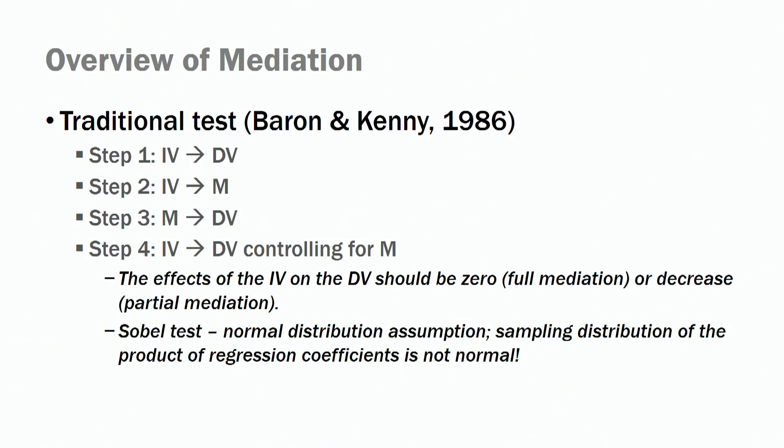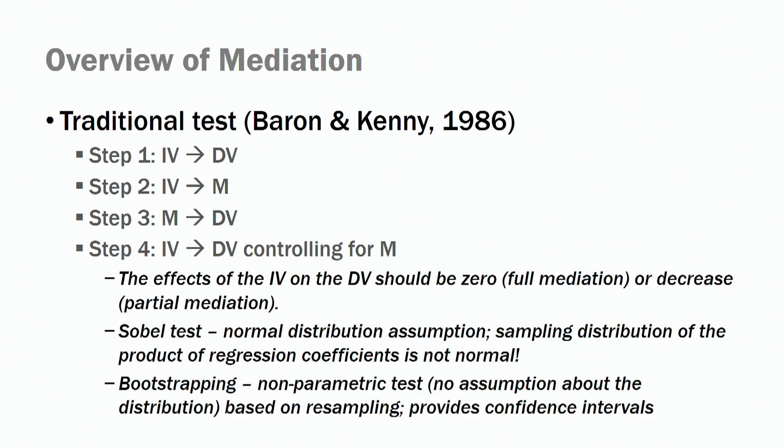There is a better way to do that: running a bootstrapping analysis. With bootstrapping, you get a confidence interval — this is a nonparametric test, so there is no assumption about the distribution of the indirect effect. With this resampling process, you get a 95% confidence interval and look at whether zero falls within it. If zero is in the confidence interval, you don't have evidence for an indirect effect. If zero is not in the confidence interval, then you do have evidence for the indirect effect.